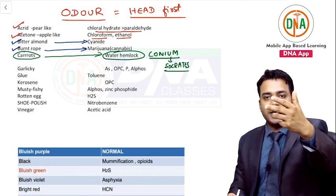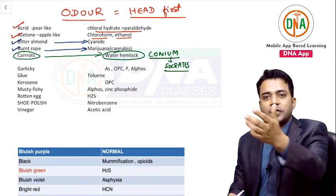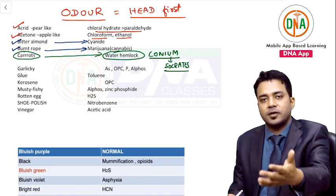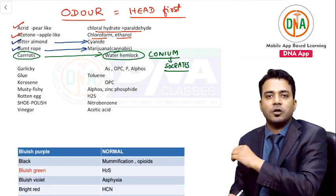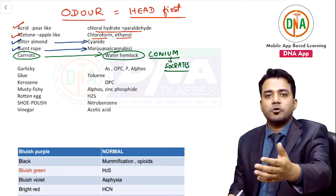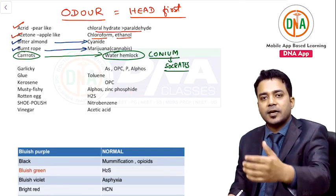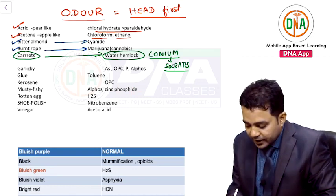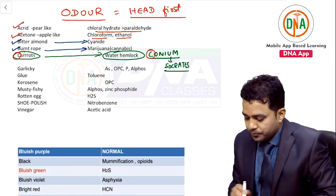To summarize alphabets A, B, C: acrid pear-like smell — chloral hydrate and paraldehyde; acetone apple-like — chloroform and ethanol; burnt rope — cannabis; bitter almond — cyanide; carrot-like smell — conium. C for carrot, C for conium.